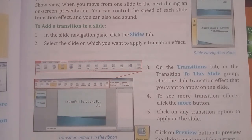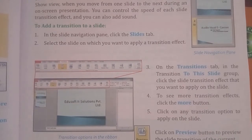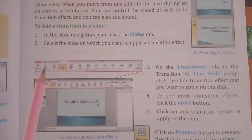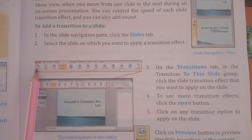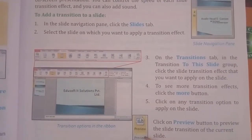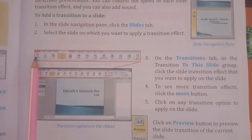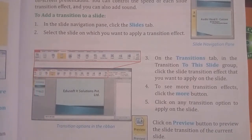Then after choosing the effect and options, they will automatically apply to your slide. In step 6, click the Preview button to preview the slide transition of the current slide. The Preview button is in the left corner. The transition which is applied to the presentation will be shown in the preview.